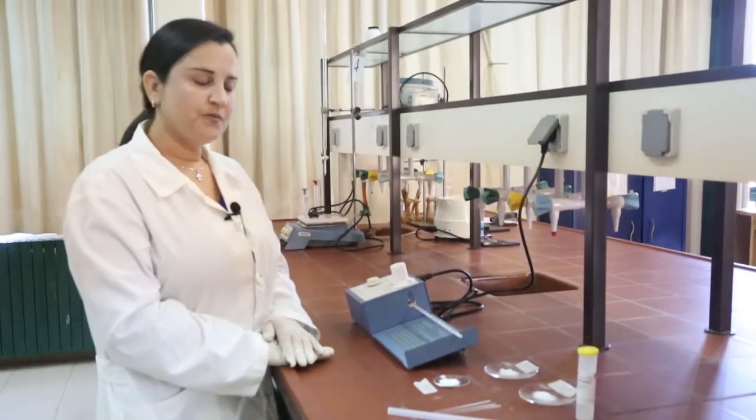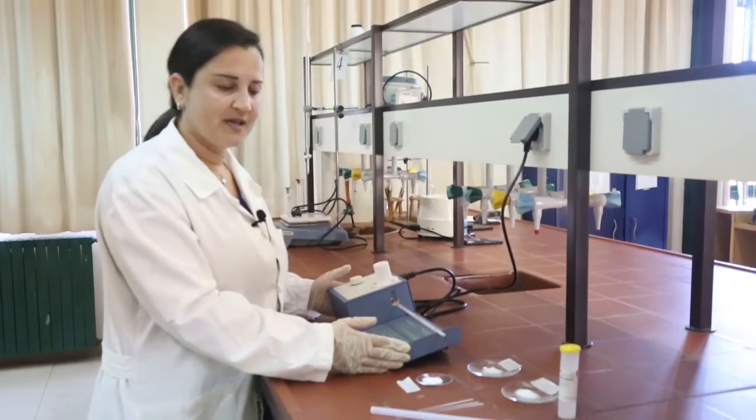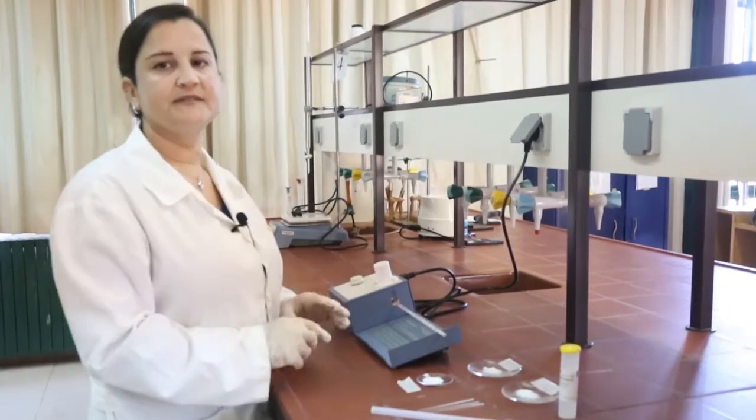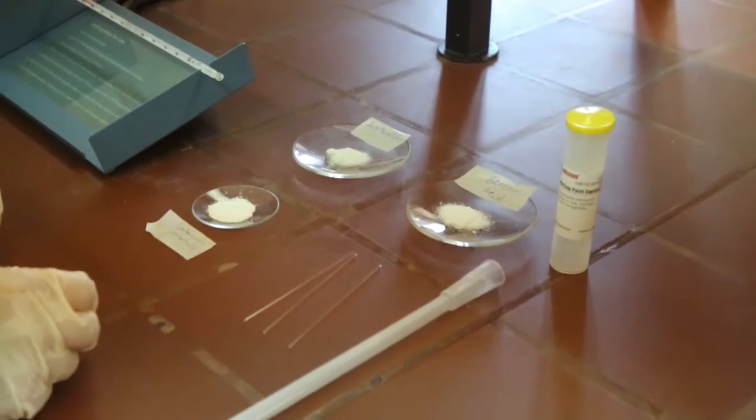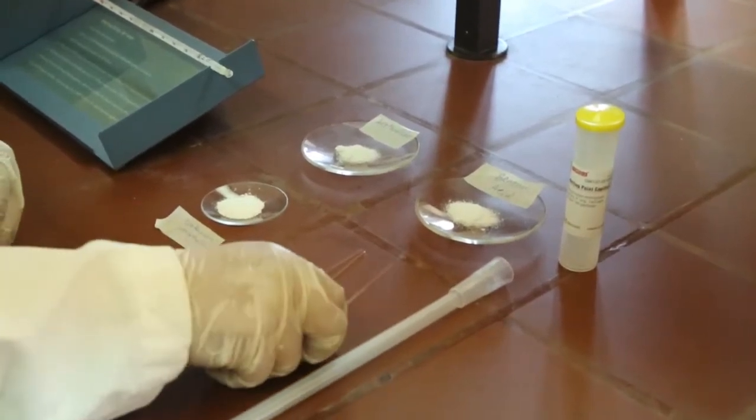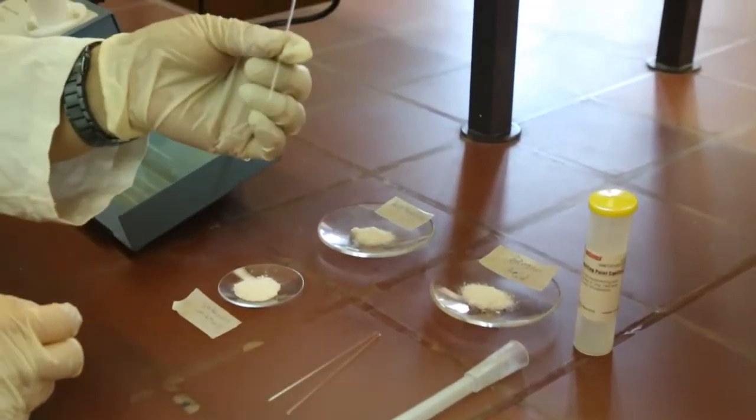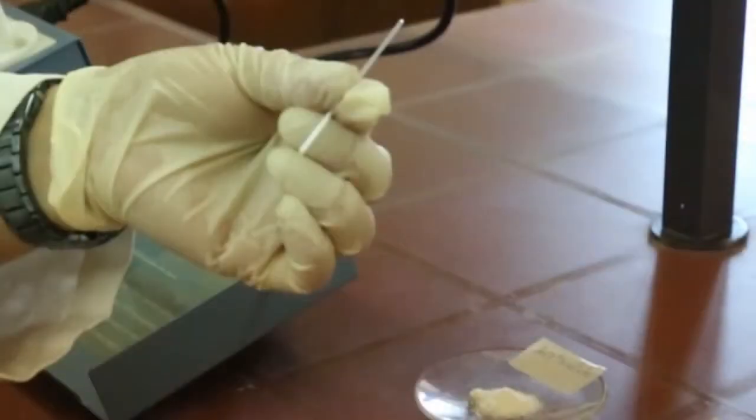We are going to show you the melting point apparatus and the chemicals that we are going to use. To introduce the chemicals inside the melting point apparatus, we are going to use a capillary tube. The capillary tube has two ends, one sealed end and one open end.